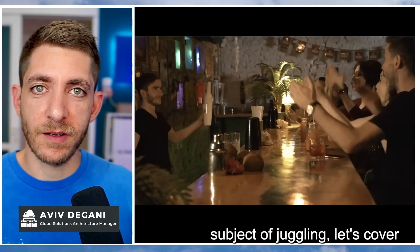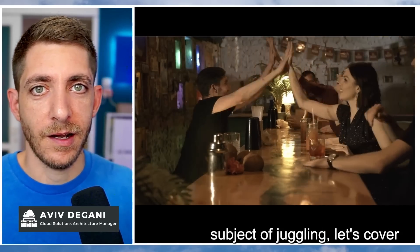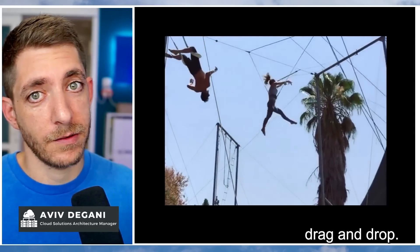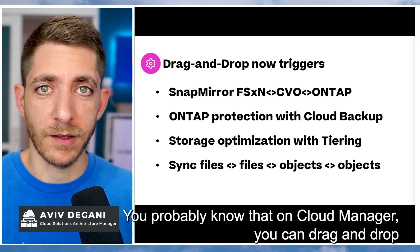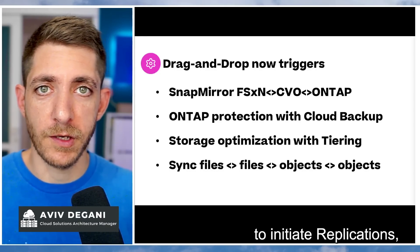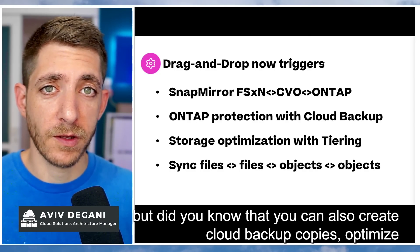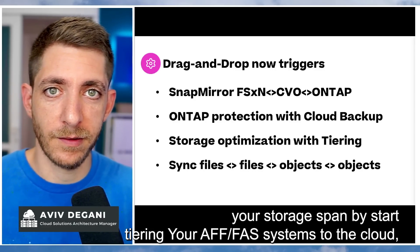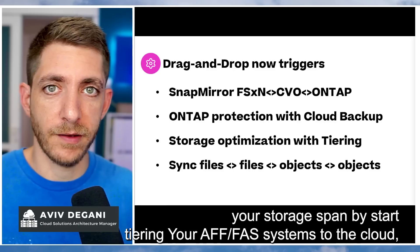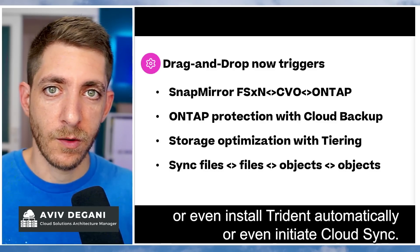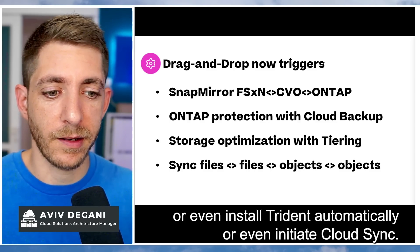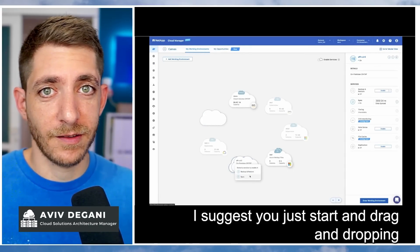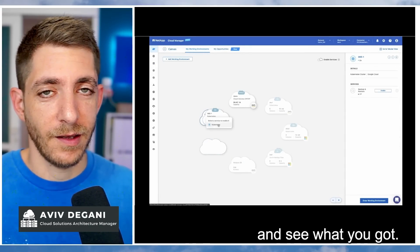On the subject of drag and drop — you probably know that in Cloud Manager you can drag and drop to initiate replication. But did you know you can also create cloud backup copies, optimize your storage spend, expand and start tiering AFF or FAS systems to the cloud, or even install Trident automatically, or initiate Cloud Sync? I suggest you just start dragging and dropping and see what you get.